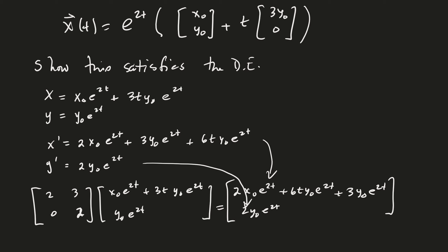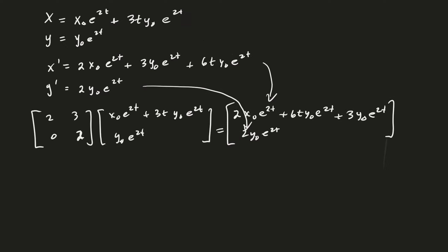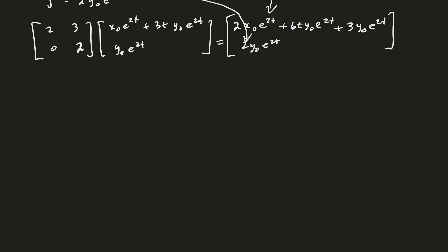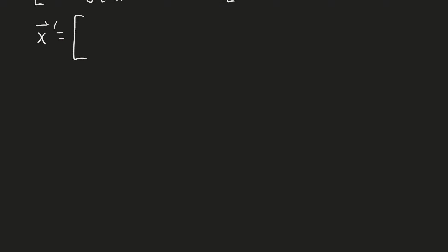So now maybe we can try one more example just to see how this works. Suppose I have the following. x prime is equal to 4 minus 2, 8 minus 4 times x with x0 being, those are initial conditions, about 2, 3. Just to make something up.